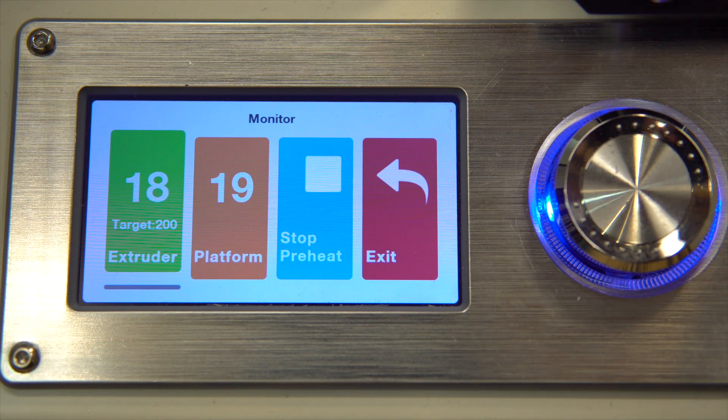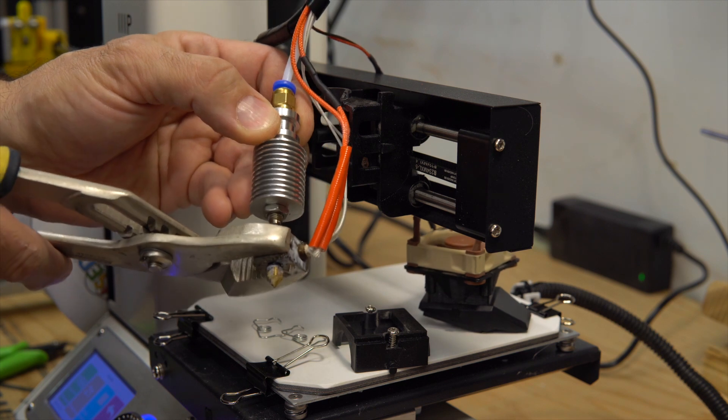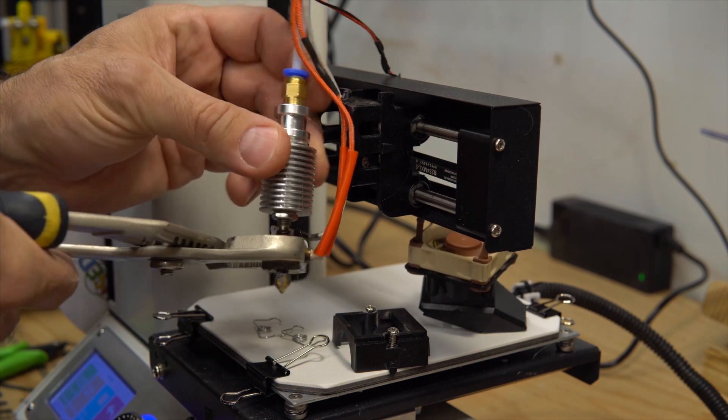Then preheat again to 200 because you need heat to remount the heatsink because there is some plastic there and it won't turn without heat.